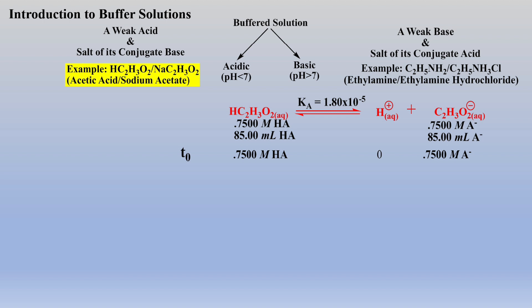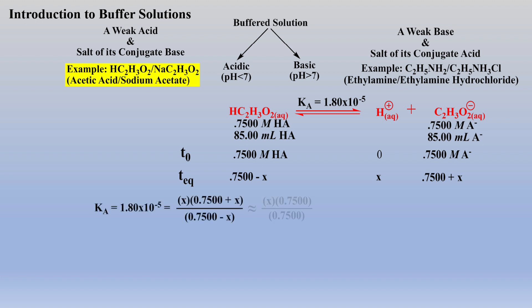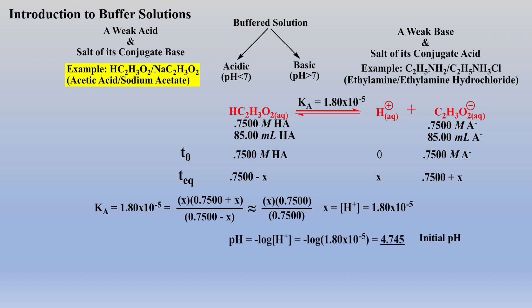First, the initial pH of this buffer solution is calculated in the usual manner by looking at equilibrium concentrations, setting up the equilibrium expression, simplifying the numerator and denominator due to the 5% rule, which simplifies the math, and solving for x, the proton concentration. Finally, the initial pH of this acidic buffer solution is afforded.